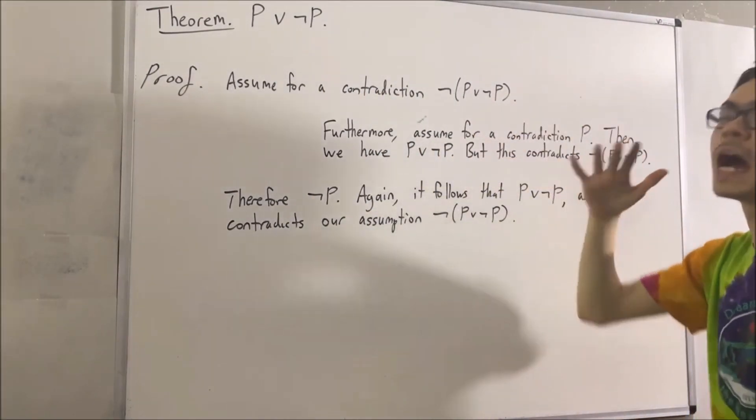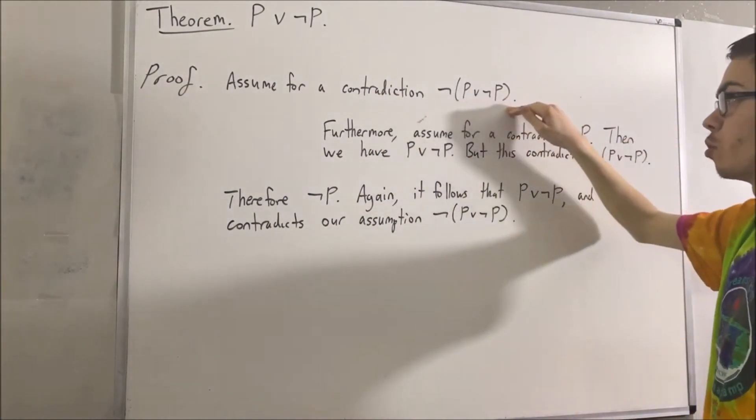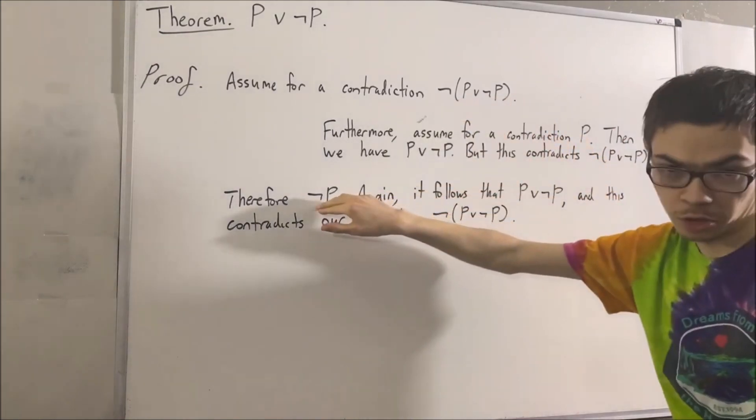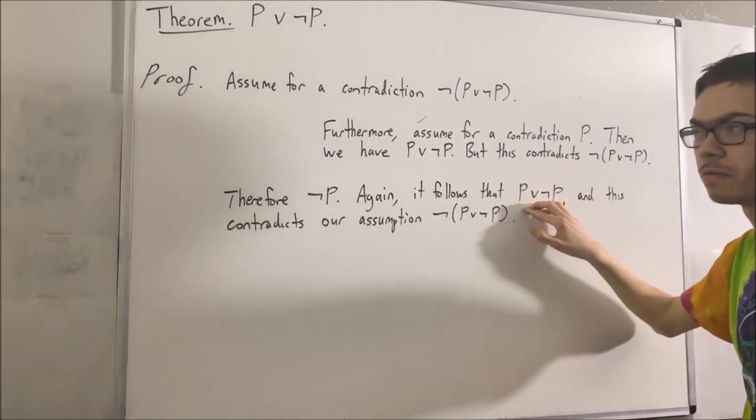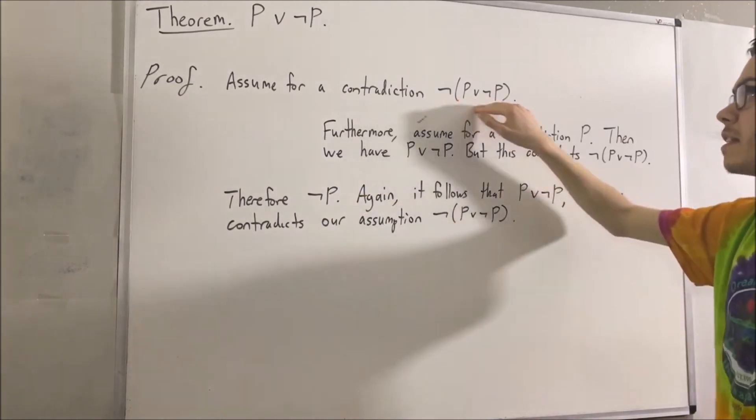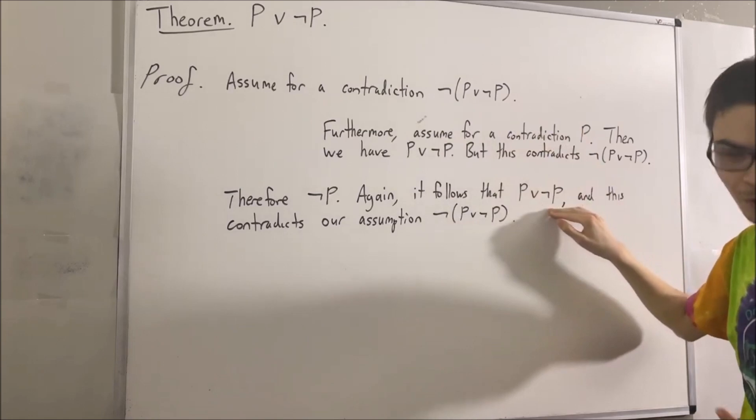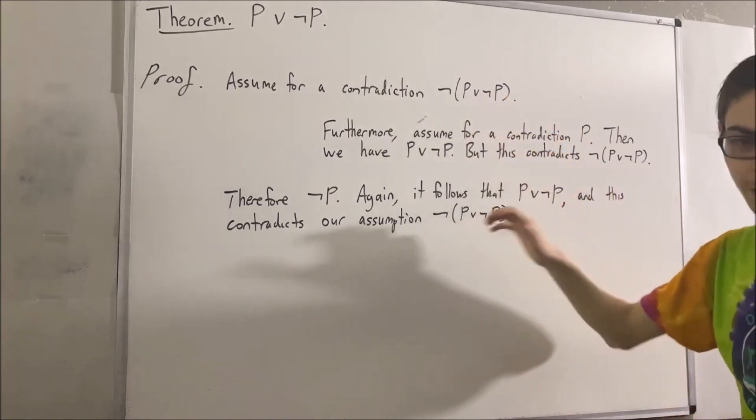So really, our assumption that this is true implied that not P is true, but then that further implied that P or not P is true. So really, this implies that its opposite is true. So really, we have a contradiction.